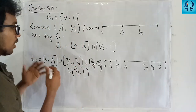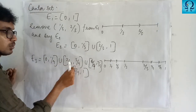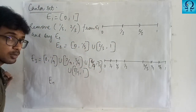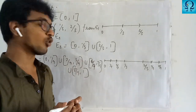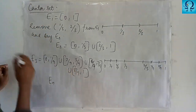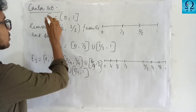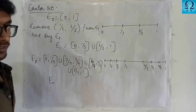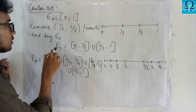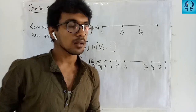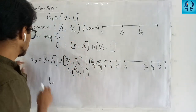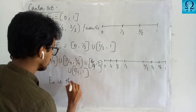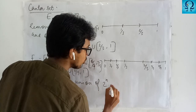In a similar way, we continue removing the middle segment from each interval. In general, the construction proceeds this way. For easier notation, suppose we call the original interval E0, then E1, E2, and so on. You may notice that E0 consists of 1 interval, E1 consists of a union of 2 intervals, E2 consists of a union of 4 intervals. In general, En is the union of 2^n intervals.